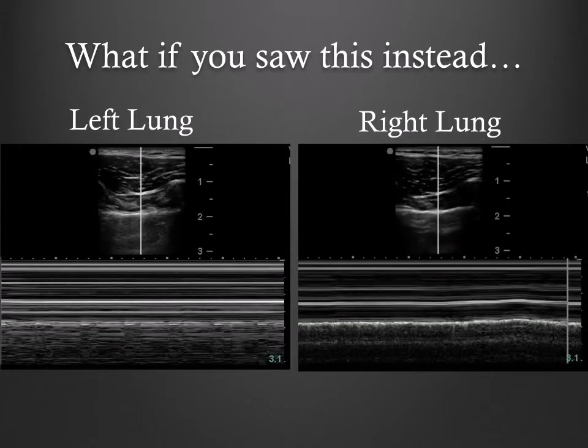Imagine that you instead notice what seems to be an inconsistent pattern. You notice that you have lung sliding on the right, but do not have lung sliding on the left. However, your lung pulse is present bilaterally, ruling out pneumothorax. Your unifying diagnosis is right mainstem intubation. Your lung pulse remains as the heart continues to beat; however, you are no longer ventilating your left lung, and therefore do not see lung sliding beyond movement induced by the heart.